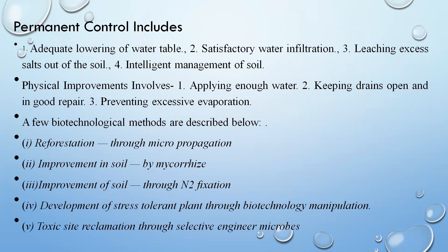Permanent controlling measures to make the land usable include: adequate lowering of the water table to satisfactory levels, controlling water infiltration deeply into the soil, and leaching — a process where excess salts are removed from the soil. Leaching effectively removes salt from the soil, and intelligent management of the soil is another key permanent controlling measure.